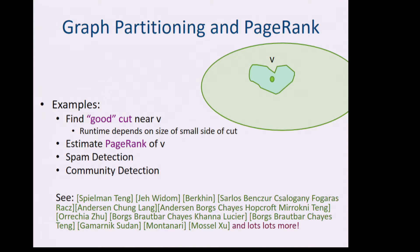A third scenario where you might want local algorithms is graph partitioning and page rank. You might have a huge graph — like the Facebook graph — and you want to find communities: a good cut near a certain node V where the runtime depends only on the size of the small side of the cut. Or you might want to estimate the page rank of V, do spam detection, or community detection. There has been a number of works on these sorts of models.